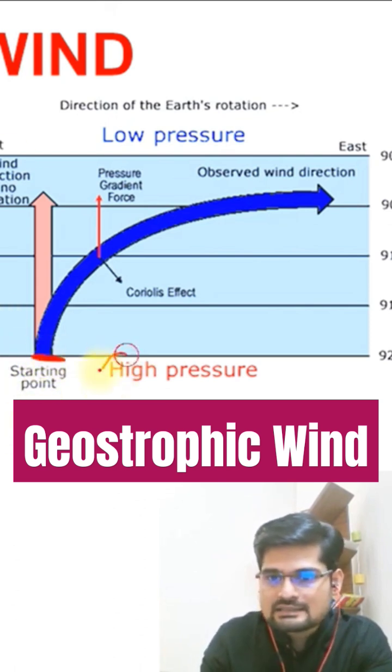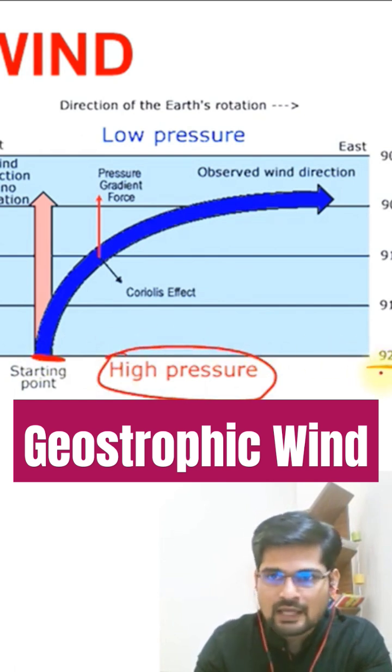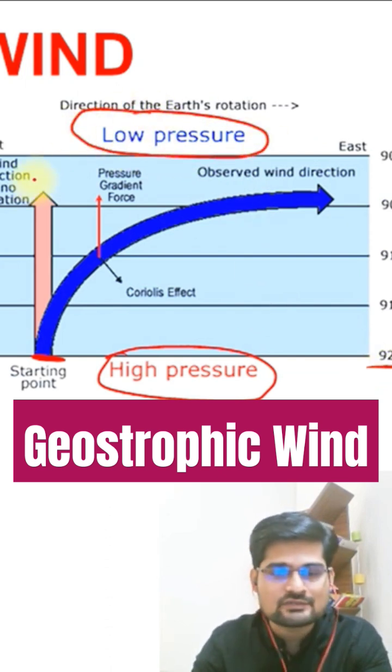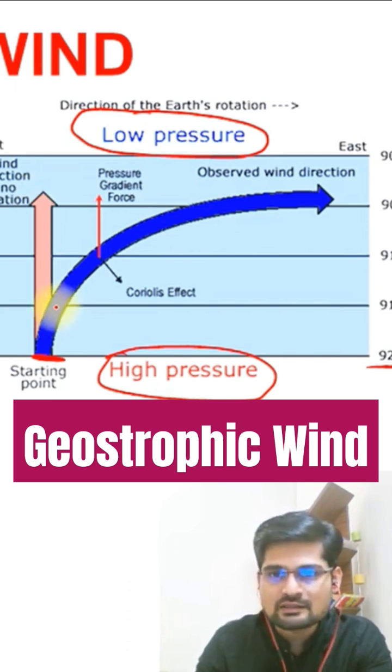This is the starting point and this is the high pressure here. So it's 920 millibar and what is happening? From high pressure, it is going towards low pressure. That is the normal wind action as we have learned in the previous sessions. So what do you see here?